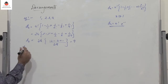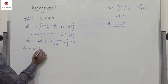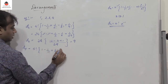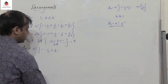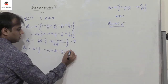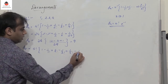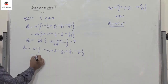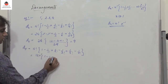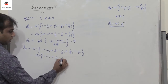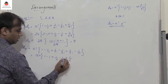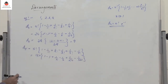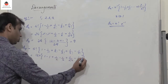Find D5. So 5 factorial times (1 minus 1 by 1 factorial plus 1 by 2 factorial minus 1 by 3 factorial plus 1 by 4 factorial minus 1 by 5 factorial). We know 5 factorial is 120. Solving this, you will get the value as 44.